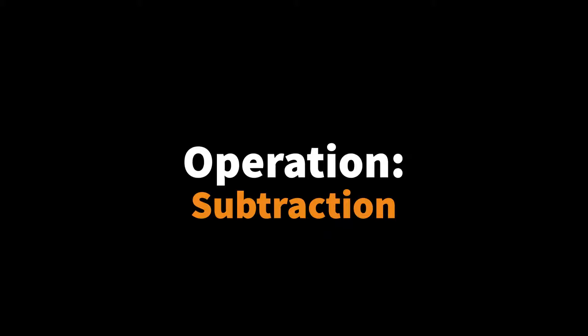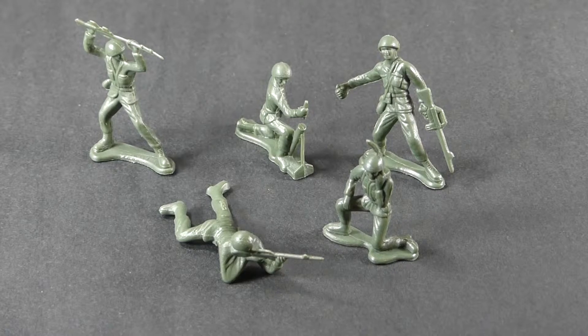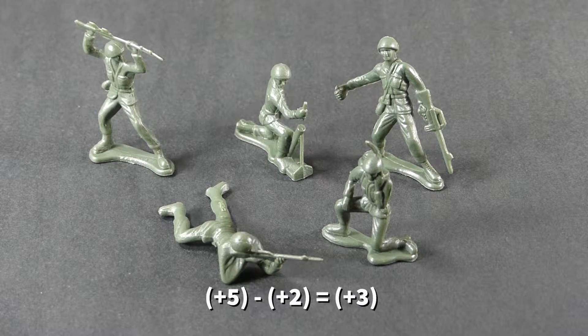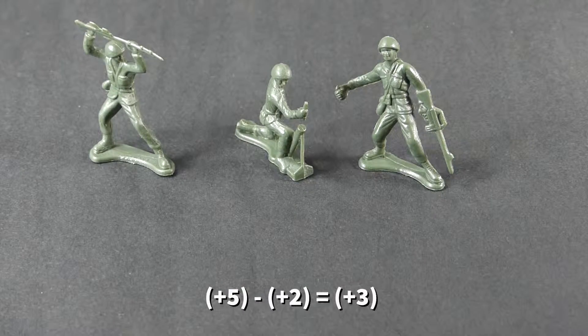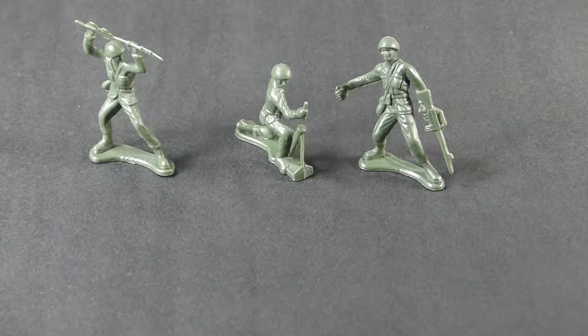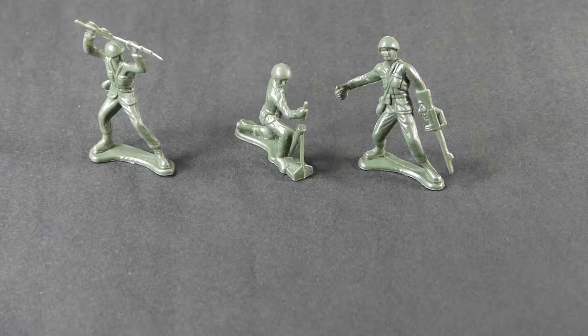When subtracting integers, it's important to remember our rules for addition, because we're going to use that a lot when we model. But our first one is pretty straightforward: a positive minus a positive is going to equal a positive — kind of like back in elementary school. So positive five minus positive two is just going to be a positive three, and it's easy to see with our soldiers; we just took two away.